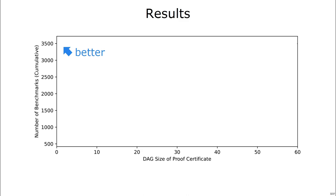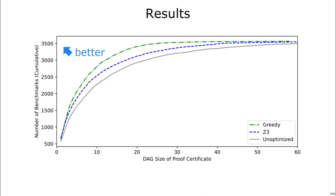This graph will show a cumulative number of benchmarks for a particular size of proof certificate. We have three lines here. The green line is our greedy algorithm, which I showed on the last slide, for getting proofs out of e-graphs. The blue line is Z3's brute force algorithm for trying to shrink proof size. And the gray line is an unoptimized proof size if you didn't try to find a smaller proof at all. Up and to the left is better because a greater number of benchmarks had a smaller proof size, and you can see that we beat both Z3 and unoptimized.